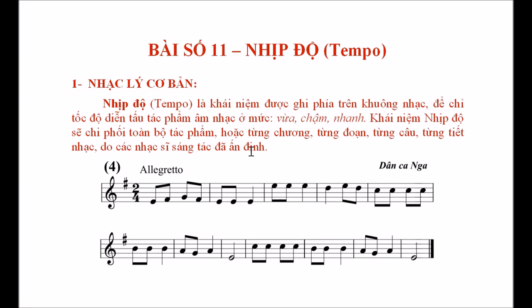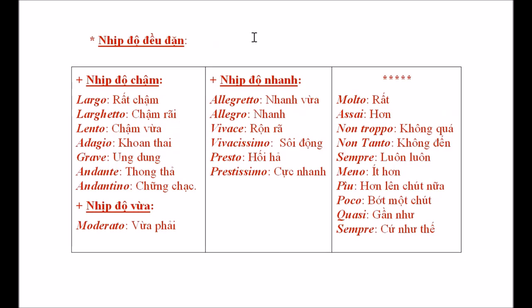Nhịp độ là khái niệm được ghi ở phía trên của khuôn nhạc. Chúng ta nhìn vào đây: Allegretto - để chỉ tốc độ diễn tấu tác phẩm âm nhạc ở mức vừa, chậm hoặc nhanh. Khái niệm nhịp độ sẽ chi phối toàn bộ tác phẩm âm nhạc, hoặc chi phối từng chương, từng đoạn, từng câu hoặc thậm chí là từng tiết nhạc do các nhạc sĩ sáng tác đã ấn định. Về nhịp độ, người ta chia thành nhịp độ đều đặn và nhịp độ thay đổi.